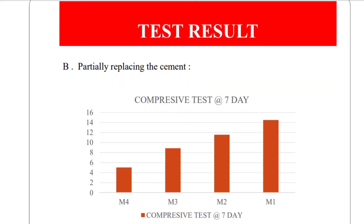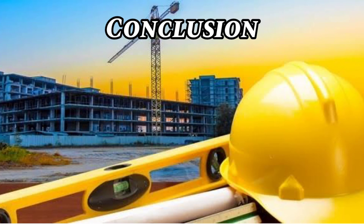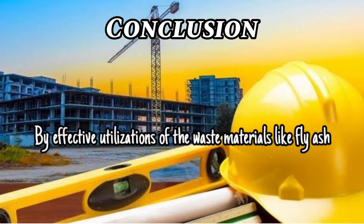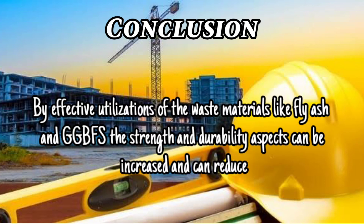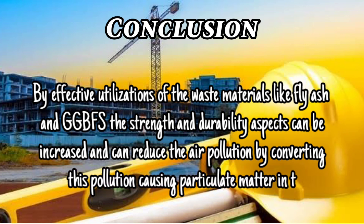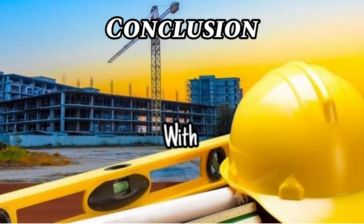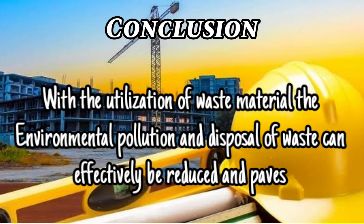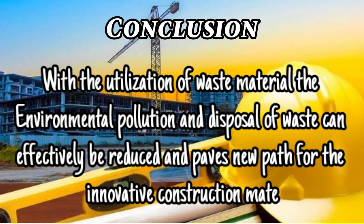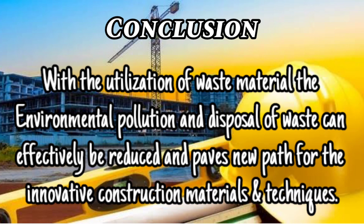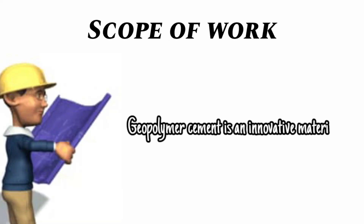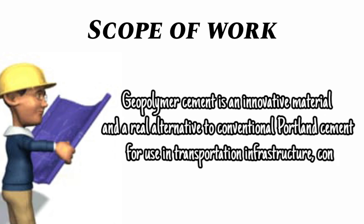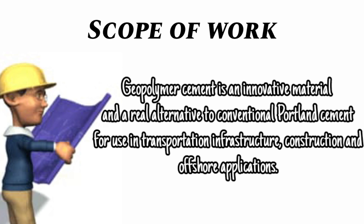The conclusion of our project is that by effective utilization of waste materials like fly ash and GGBS, the strength and durability aspects can increase, and air pollution can be reduced by converting these pollution-causing particulate materials into useful building materials. With utilization of waste materials, environmental pollution and disposal of waste can be effectively reduced, paving a new path for innovative construction materials and techniques. The scope is that geopolymer cement is an innovative and real alternative to conventional Portland cement for use in transportation, infrastructure, construction, and offshore applications. Thank you.